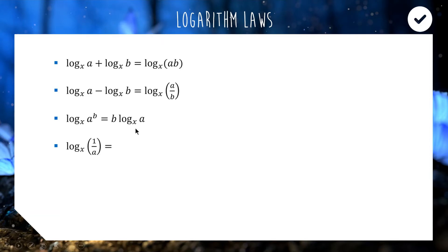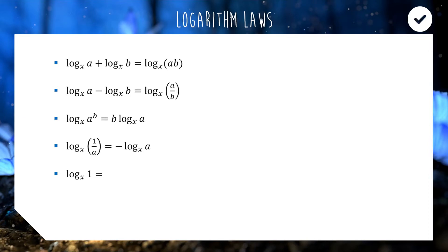The next law is less common but still important: log base x of 1 over a is the same as negative log a. The reason is that 1 over a can be written as a to the minus 1, and then the power of minus 1 comes down the front — essentially using the blogger property with a power of minus 1. We also have two familiar ones from last video: log base anything of 1 is always zero, because anything to the power of zero gives 1; and when your base and subject match, the answer is always 1, because x to the 1 equals x.